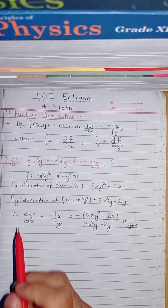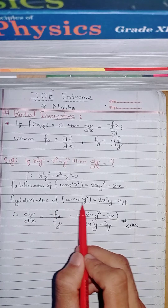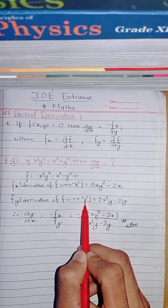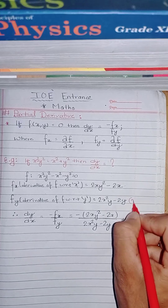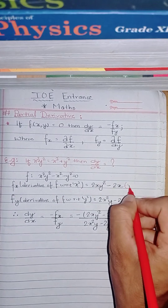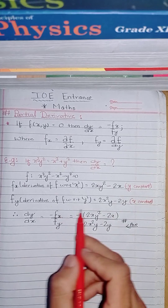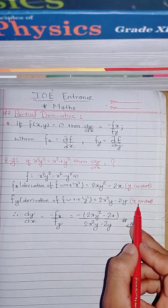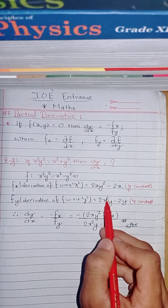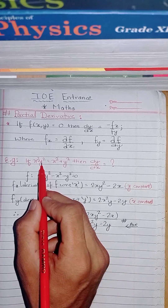Now find fy, the derivative of f with respect to y. Treating x as constant: the derivative of x squared y squared with respect to y — x squared is constant, so derivative of y squared is 2y, giving x squared times 2y. Then minus derivative of x squared with respect to y is 0, minus derivative of y squared with respect to y is 2y. So fy = 2x²y - 2y.